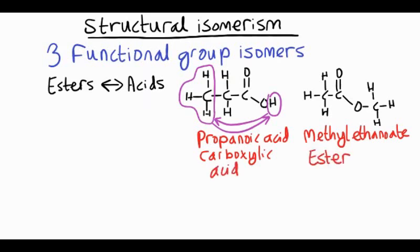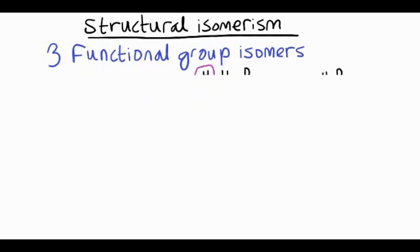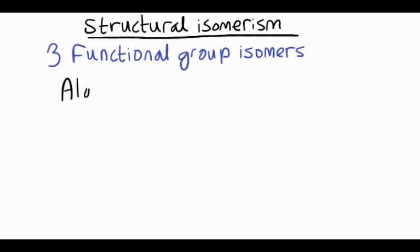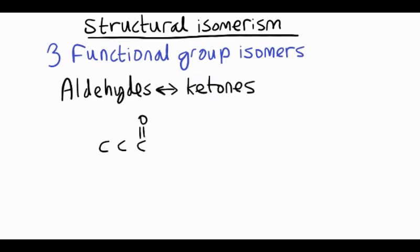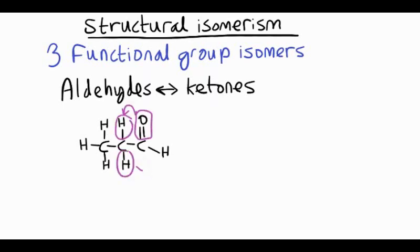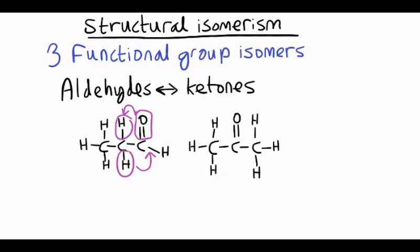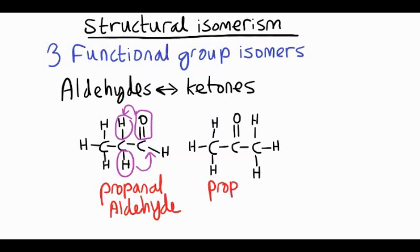Let's have a look at another example of functional group isomers — this time aldehydes and ketones. Aldehydes and ketones are functional group isomers of each other by moving the carbon-oxygen double bond. Take propanal for example: the C=O is on the end carbon, making it an aldehyde. But if we swap it with that hydrogen and move the C=O to the second carbon, moving the hydrogens back onto the first carbon, we've got the same number of atoms but a different structure, leading to a different functional group. Propanal is an aldehyde, and it becomes propanone, which is a ketone.